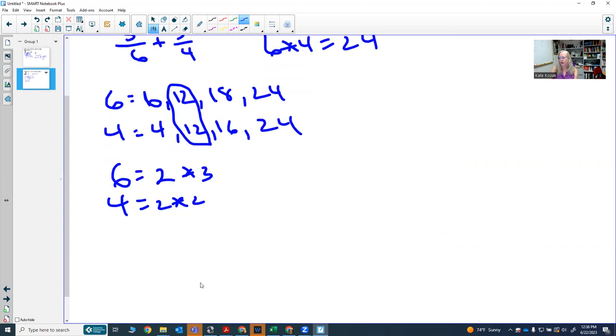The lowest common denominator must have both factors of 6, so it must have a 2 and a 3. It must also have the factors of 4, so it must also have a 2 times 2, but the 2 times 3 already has a 2.